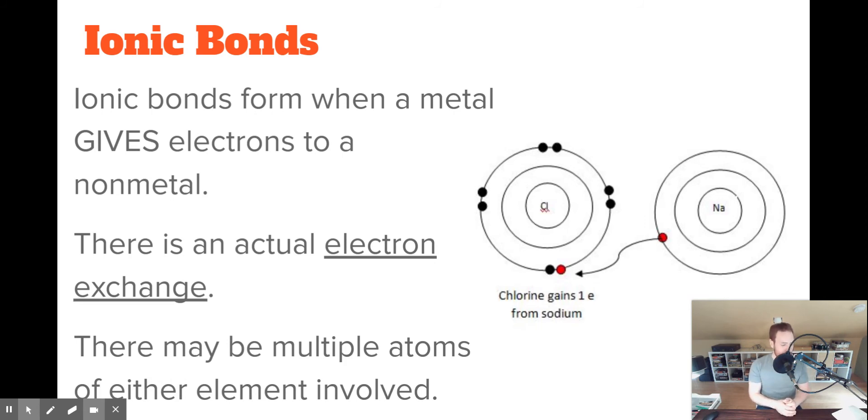So, things want to give away or gain electrons. And they're going to find each other to do that. And when a metal gives electrons to a non-metal, that helps them to both satisfy the octet rule. Something that wants to give an electron, something that wants to gain an electron, find each other. And if they do that, then they will achieve the octet rule, or at least be closer to achieving the octet rule. In these situations, there is a real full electron exchange. One electron moves from one atom to another atom.